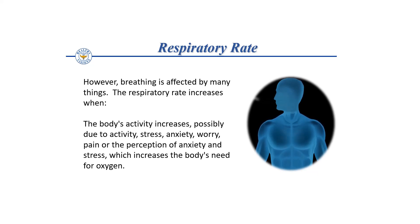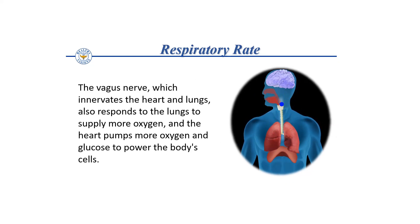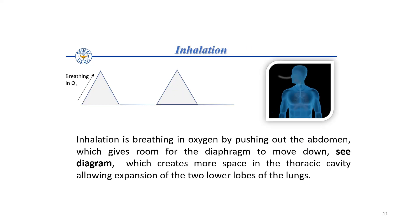The brain recognizes the oxygen needed and sends messages via the phrenic nerve to the diaphragm to breathe faster. The vagus nerve, which innervates the heart and lungs, also responds to the lungs to supply more oxygen, and the heart pumps more oxygen and glucose to power the body's cells.